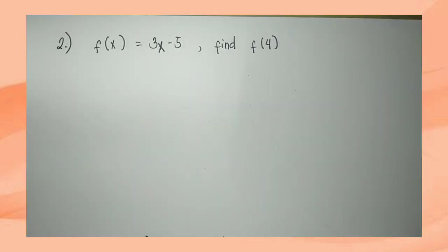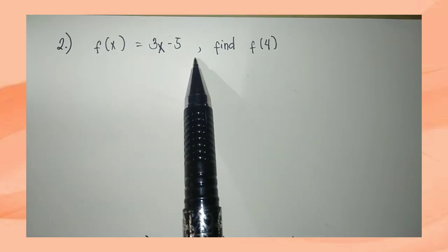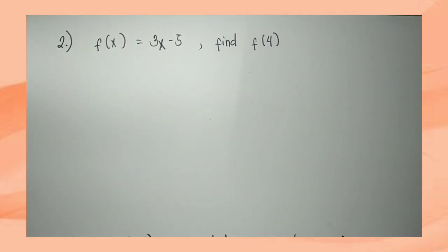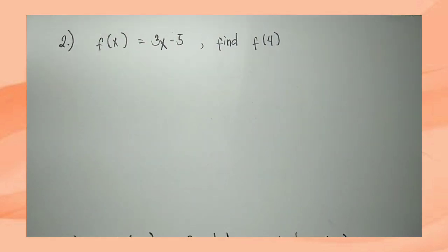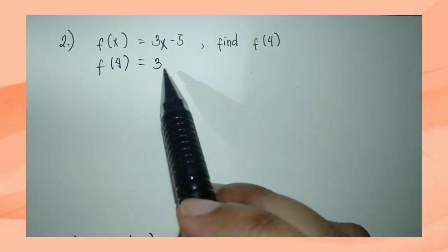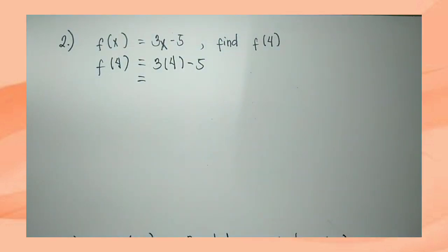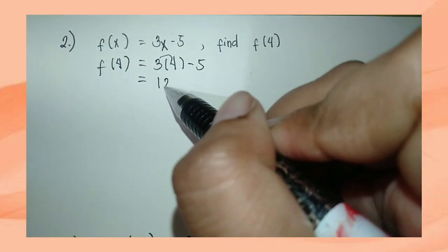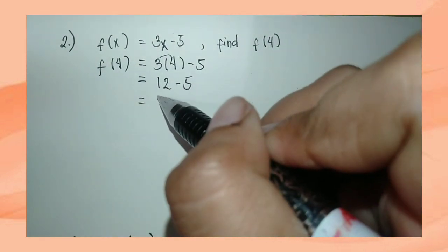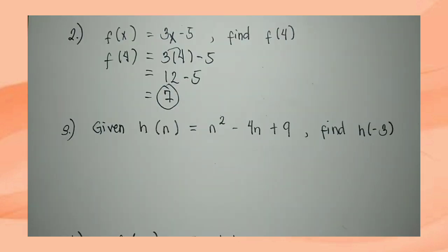Moving on to Example 2: given f of x equals 3x minus 5, find f of 4. The process is evaluation by substitution. So f of 4 equals 3 times 4 minus 5. Simplify: 3 times 4 is 12, minus 5 is equal to 7. So f of 4 equals 7.